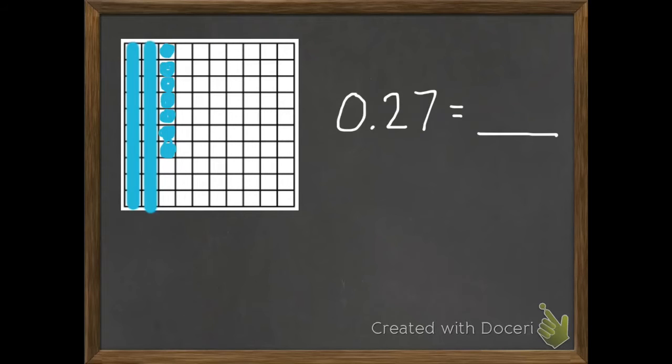So I've filled in twenty-seven of these one-hundred boxes. So now they want us to write twenty-seven-hundredths as a fraction. So I have twenty-seven boxes shaded in out of one hundred total boxes. So twenty-seven-hundredths equals twenty-seven-hundredths.